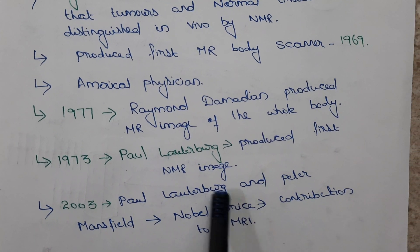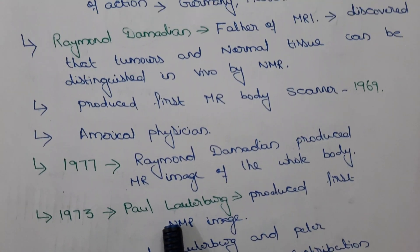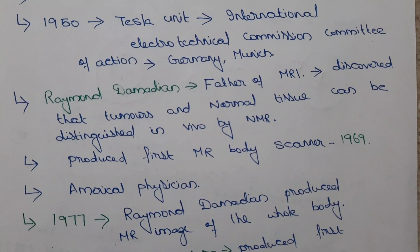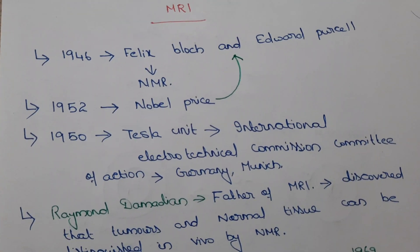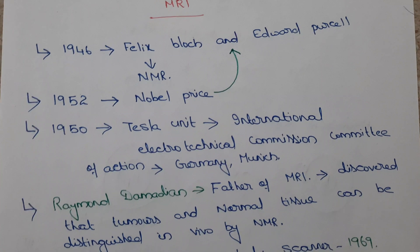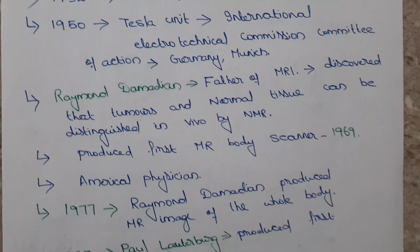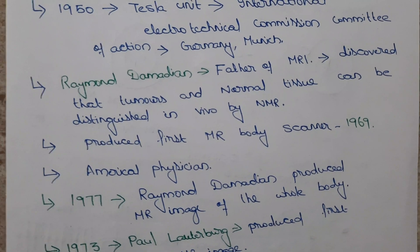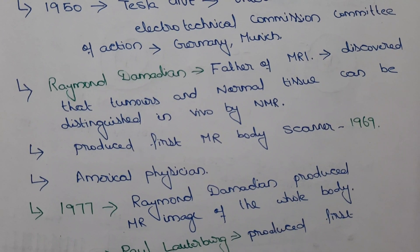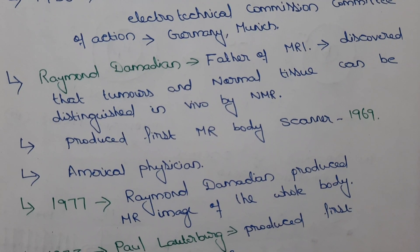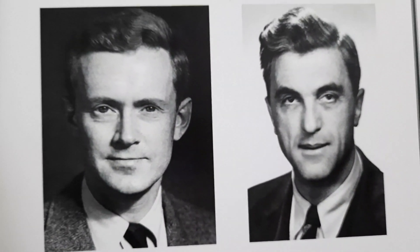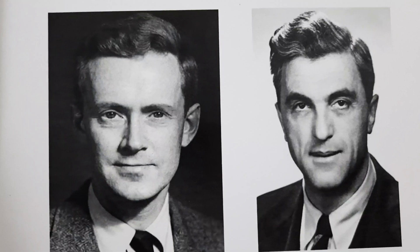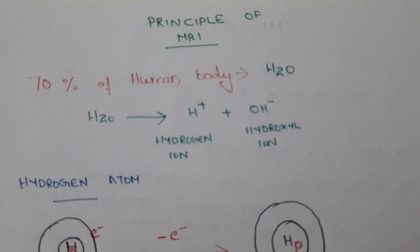If we look at the discovery of MRI, there are five scientists whose work led to its invention: Felix Bloch, Edward Purcell, Raymond Damadian, Paul Lauterbur, and Peter Mansfield. All the discoveries made by these scientists led to the modern-day MRI we see today. Here in the image you can see Peter Mansfield, Paul Lauterbur, Edward Purcell, and Felix Bloch. Now let's discuss the principle of MRI.